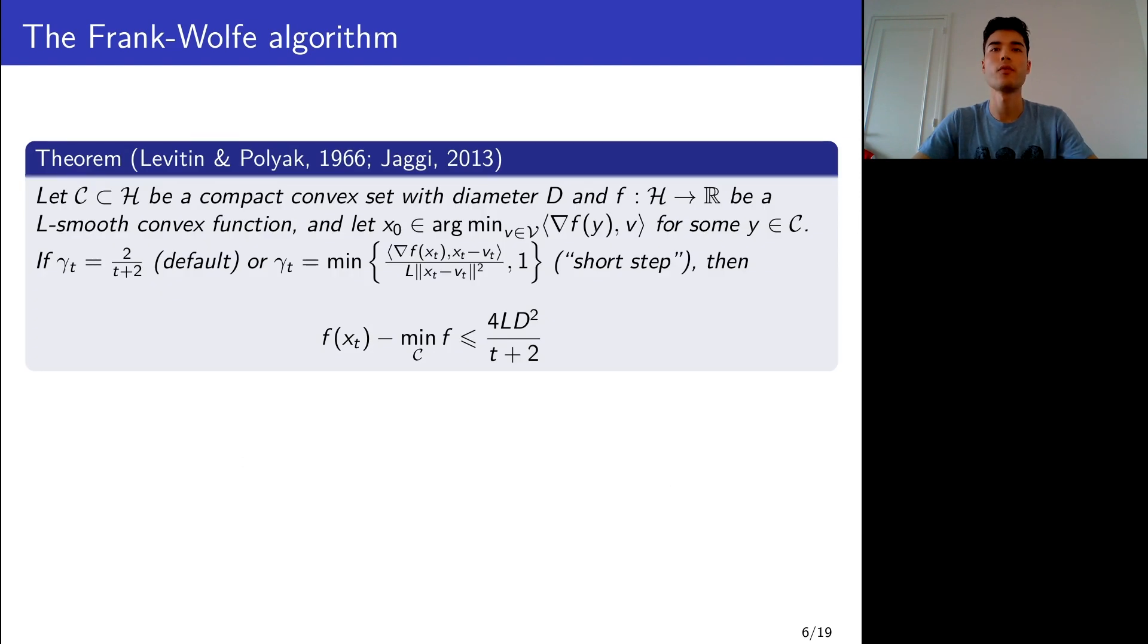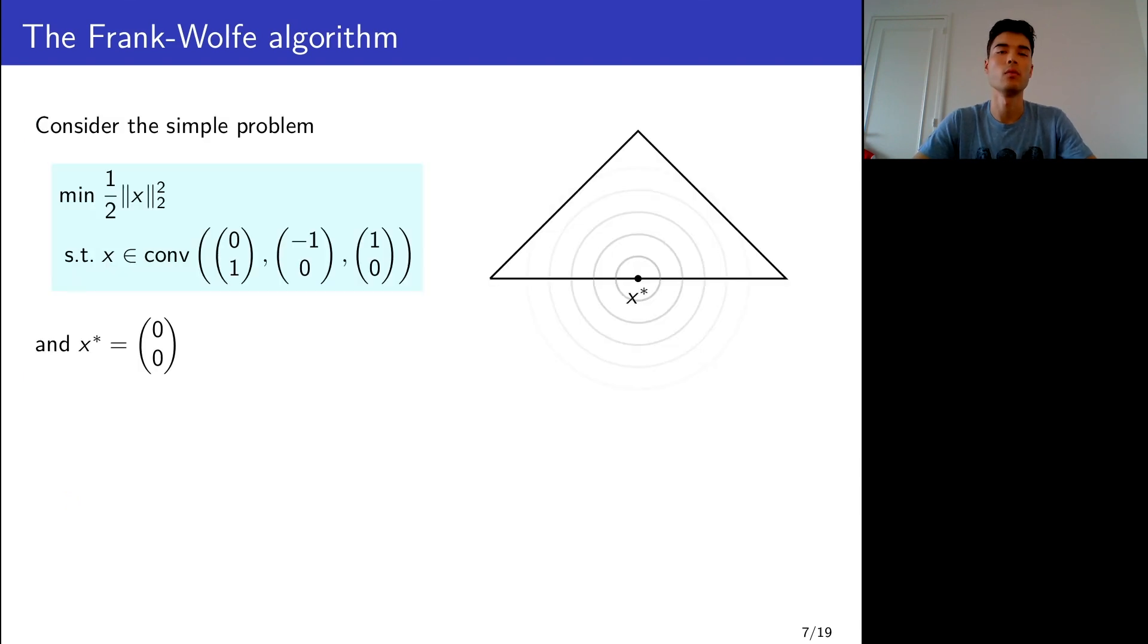The convergence rate of Frank-Wolfe is LD²/T, where L is a smoothness constant of F and D is the diameter of C. This rate is quite nice and it cannot be improved. If you do a parallel with gradient descent, then you would like the rate to be faster if F is strongly convex. But this is not the case here for Frank-Wolfe. And why is that?